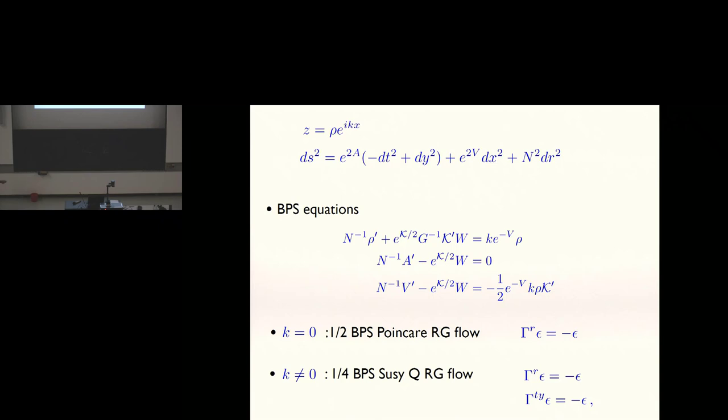Your Kähler potential should just depend on the modulus of Z. And if you want to have supersymmetry, this is not obvious, but if you go through the supersymmetry, your superpotential has to be a constant. We'll see that it doesn't preclude some interesting top-down examples.